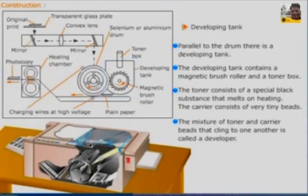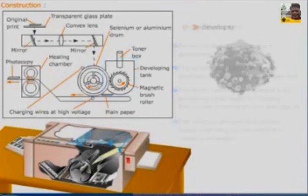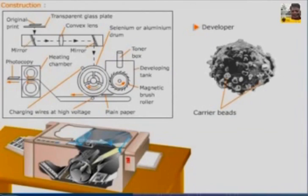The developing tank contains a magnetic brush roller and a toner box. The toner consists of a special black substance that melts on heating. The carrier consists of very tiny beads. The mixture of toner and carrier beads that cling to one another is called a developer. Here you can see a mixture of the toner and carrier beads clinging to each other.